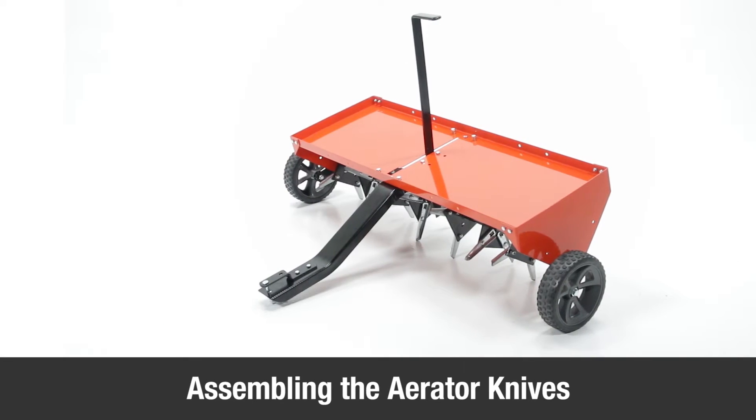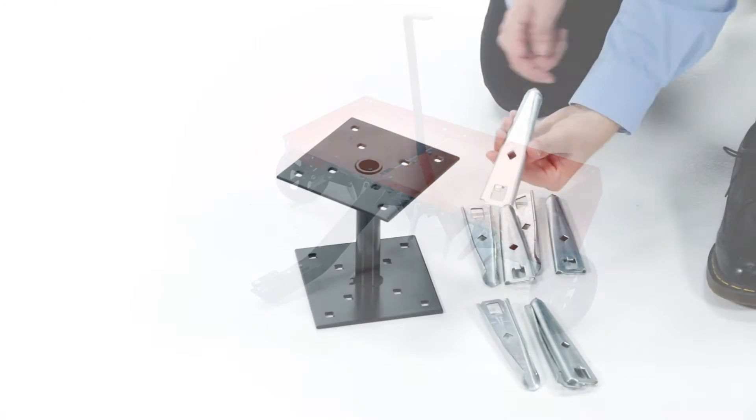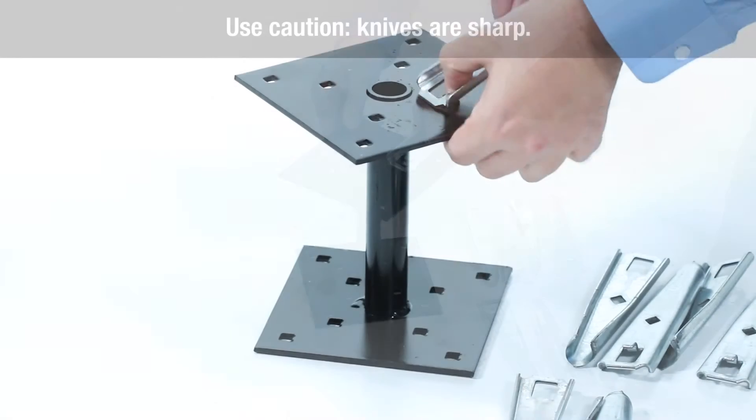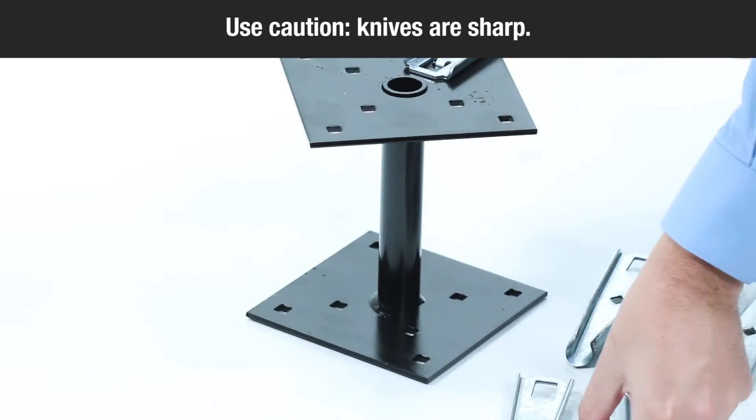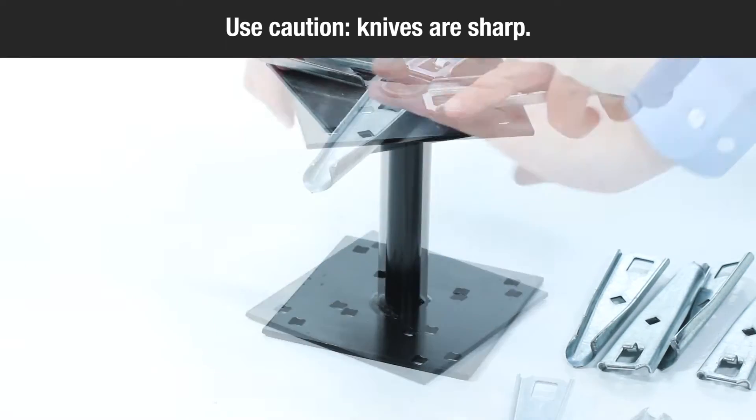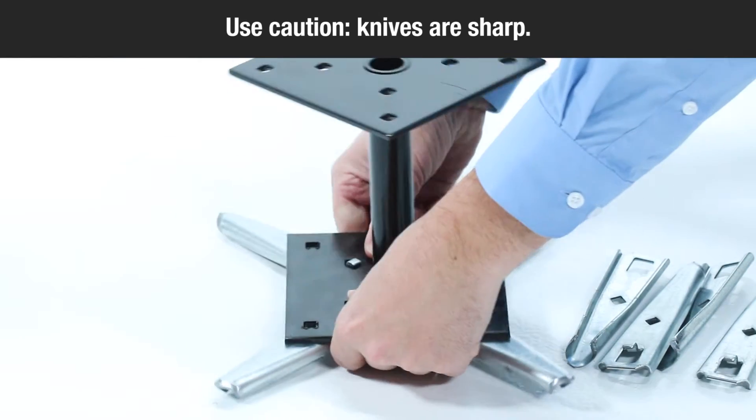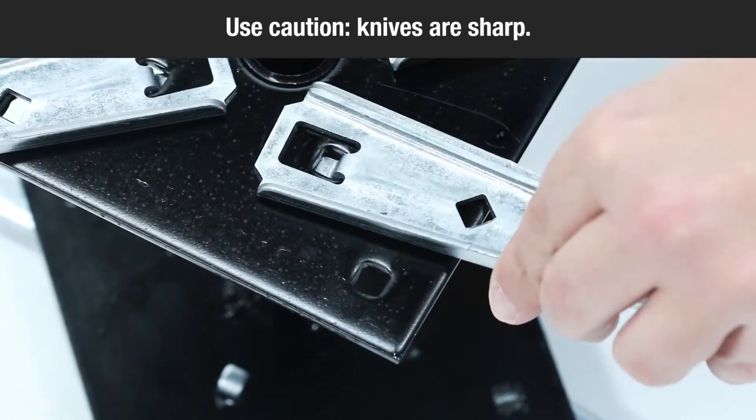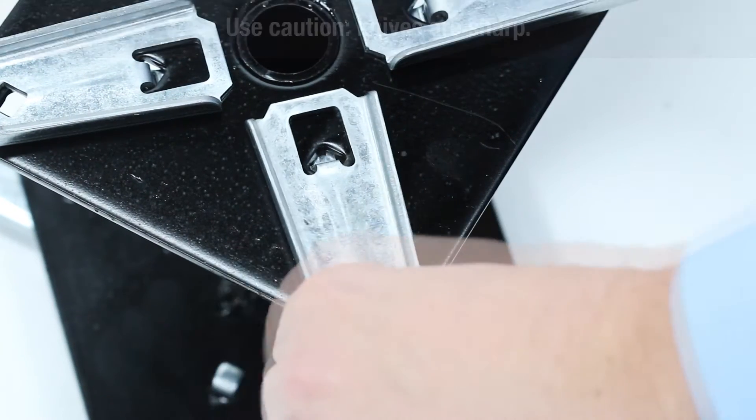This segment will show you how to assemble the aerator knives. Assemble 8 aerator knives, Part 10, on the outside of each spool assembly, Part 11, by inserting the locking tab into the spool plate and rotating the knife. As you rotate the knife, align the square holes.